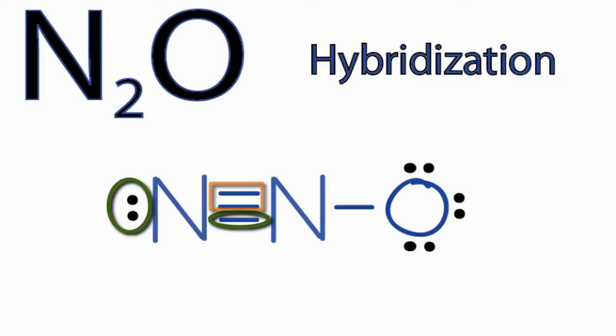We're going to count the sigma bond, ignore the pi bonds, and we're going to count that pair of electrons. So we have two things attached to that nitrogen there on the end. That means we'll have an S and a P orbital, and it'll be SP hybridized.